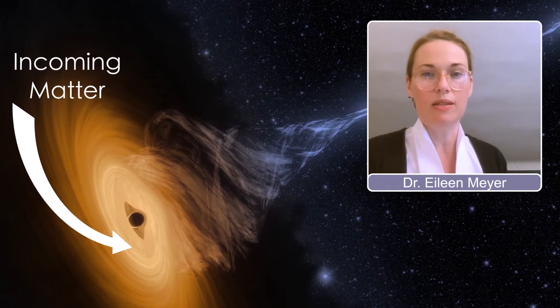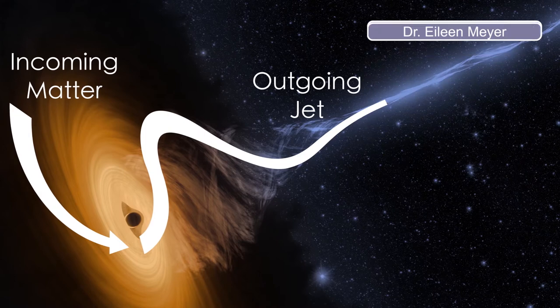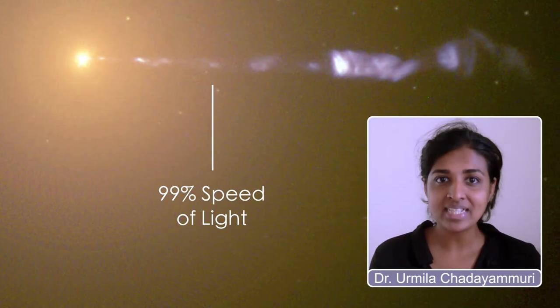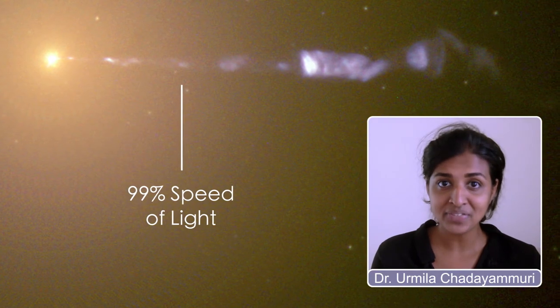The matter that's falling in never makes it all the way in and is in fact shot back out into these jets. The jet moves at 99% the speed of light. So it's one of the fastest moving things in the universe.